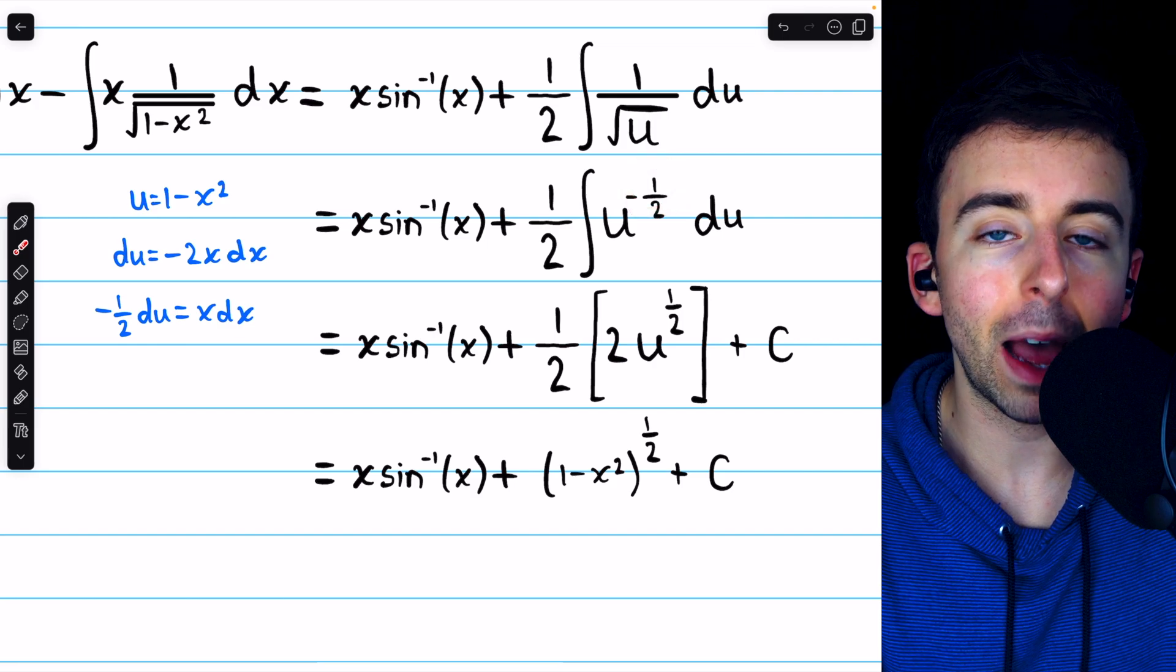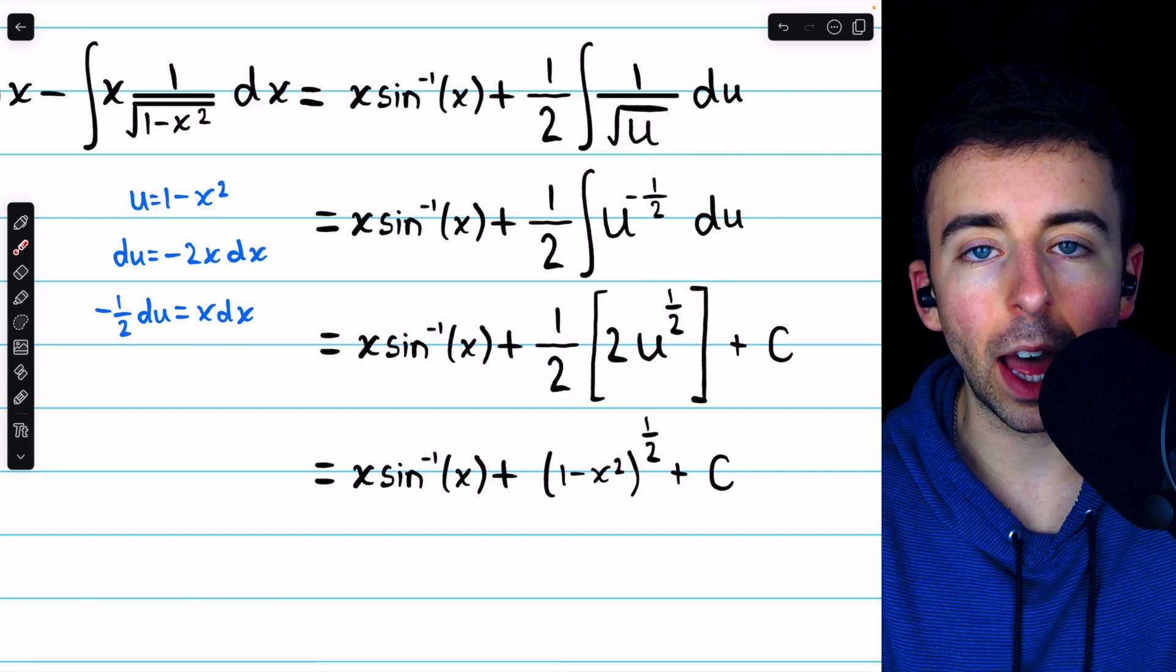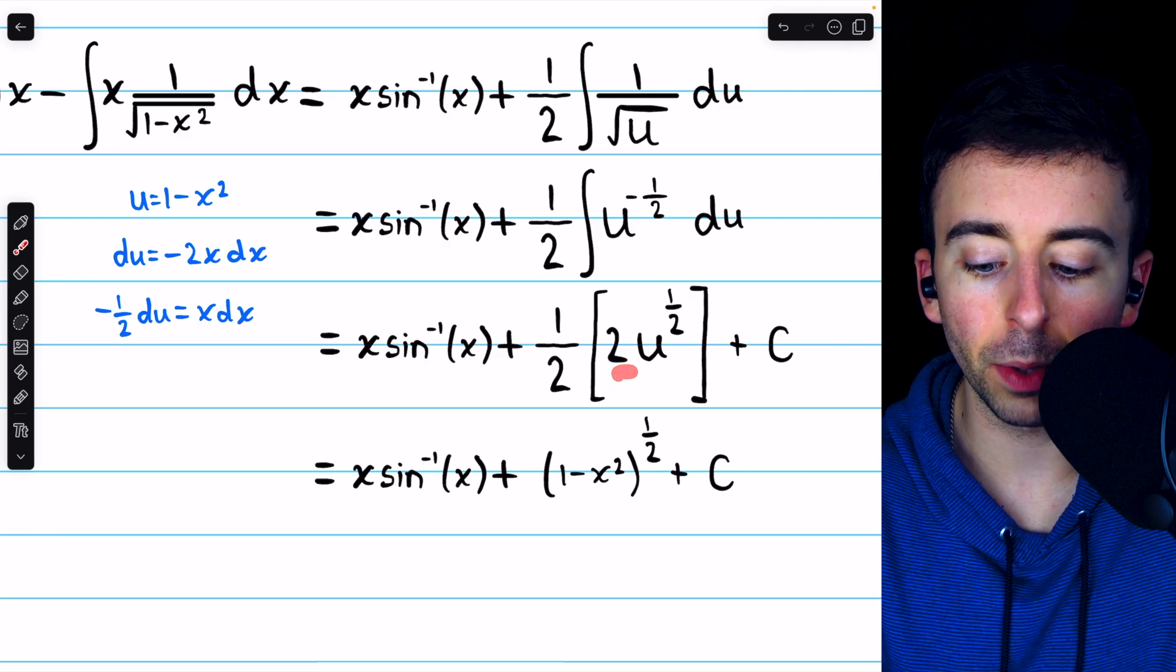Applying the power rule, we increase negative one half, the power, by 1 to positive half, and then divide by that new power. Dividing by one half is the same as multiplying by 2.